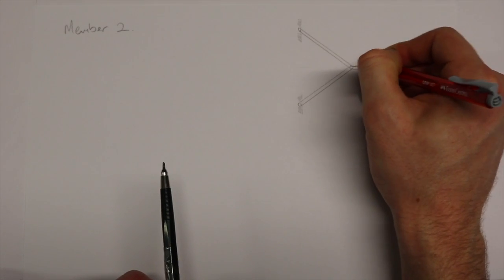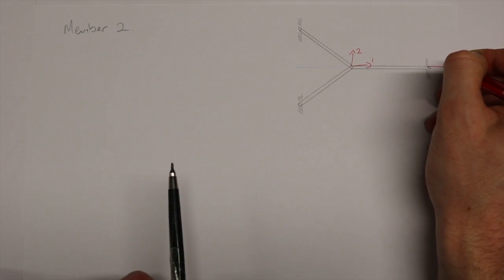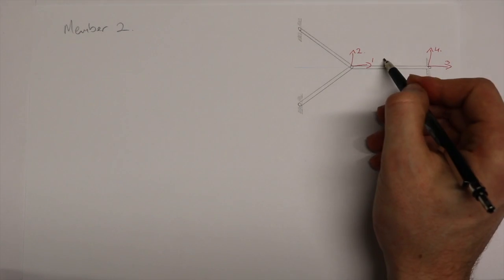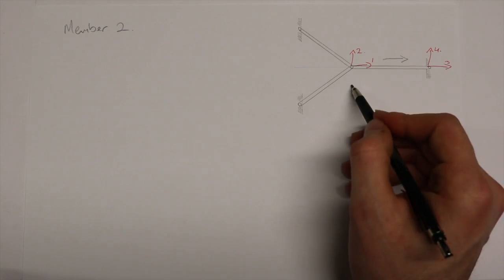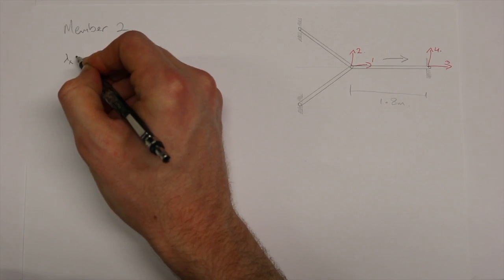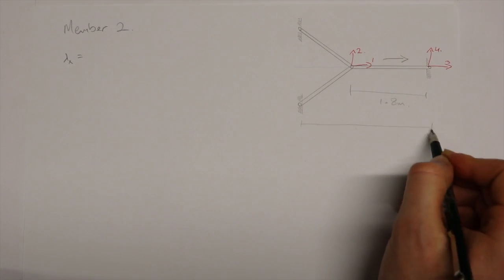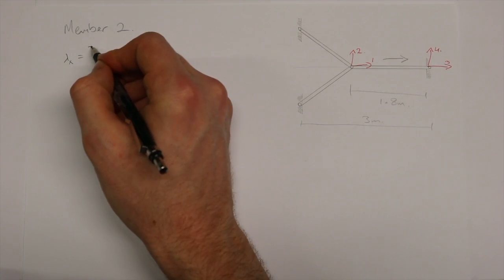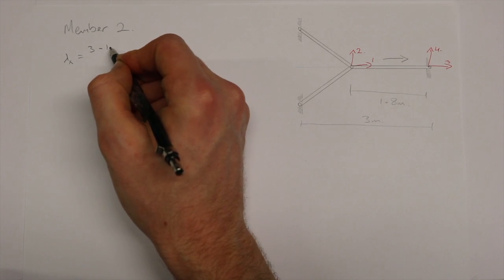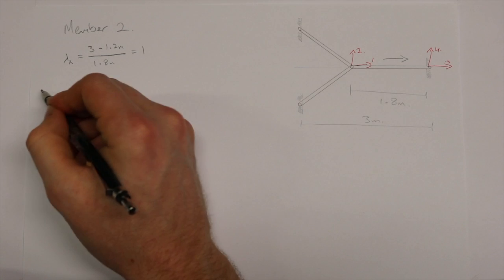We use the same method for member 2, first ensuring we have the correct degrees of freedom near and far end of the member and dimensions, with the length of the member at 1.8 meters. So for lambda x, the far end is 3 meters from our origin at node 1, with the near end 1.2 meters from the origin, all divided by our length 1.8 meters, which gives us a lambda x of 1.